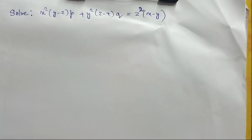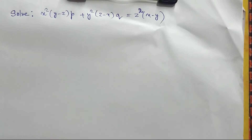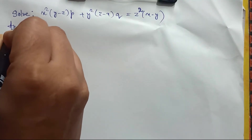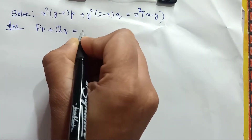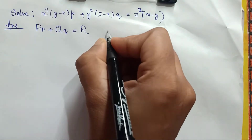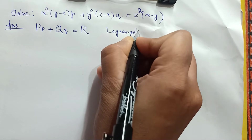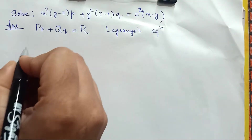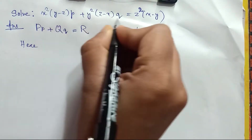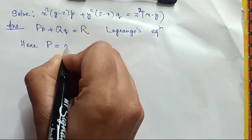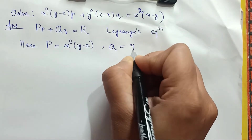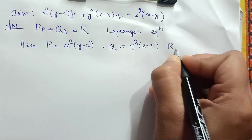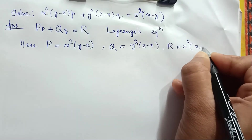Solve x² (y-z) p + y² (z-x) q = z² (x-y). To answer this, the equation is of the form P·p + Q·q = R, which is Lagrange's equation. Comparing, we have: capital P = x²(y-z), capital Q = y²(z-x), and capital R = z²(x-y).